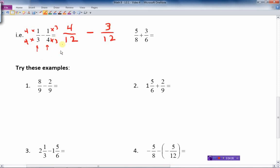And now I just subtract, and I get four minus three over twelve. So four minus three is one, and one twelfth is reduced as far as it will go. That's my final answer.